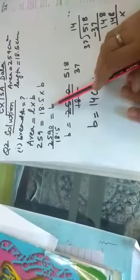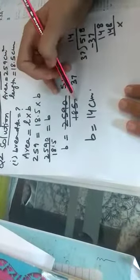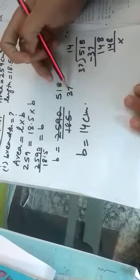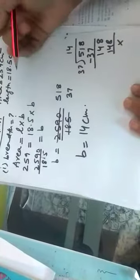Now we are putting the values. In place of area you will put the value 259 and in place of length you will put 18.5 and breadth you have to find out. When you shift it to here it will become divided and here the decimal is there. When I am removing this decimal, 10 will come over there so it will become 2590 upon 185.